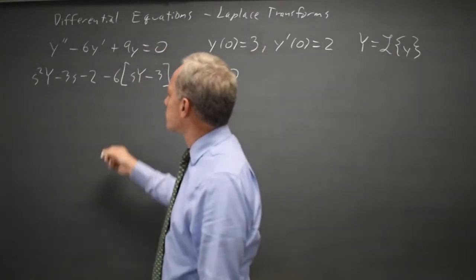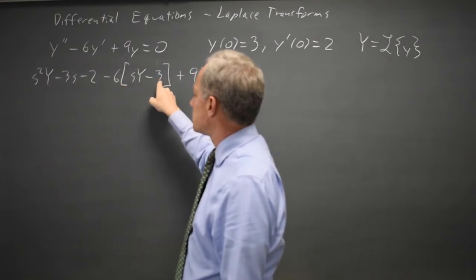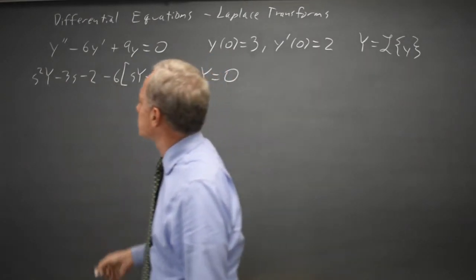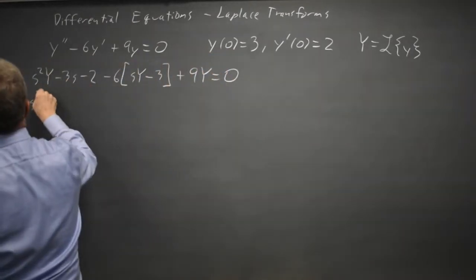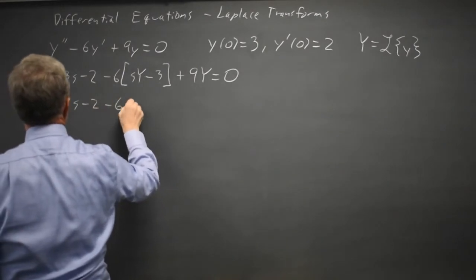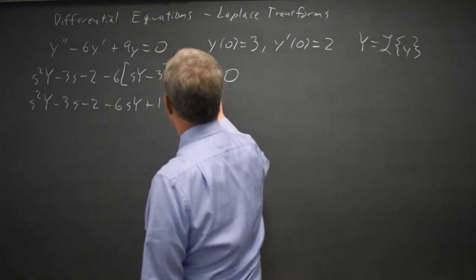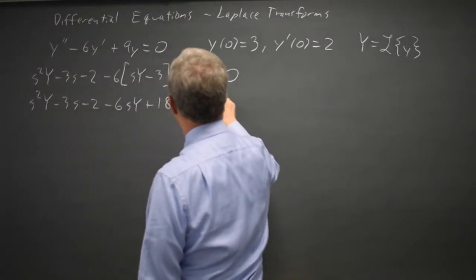Distributing and I prefer to distribute as a separate step so I don't mess up distributing the 6 to this constant or the negative. s squared Y minus 3s minus 2 minus 6sY plus 18 plus 9Y equals 0.